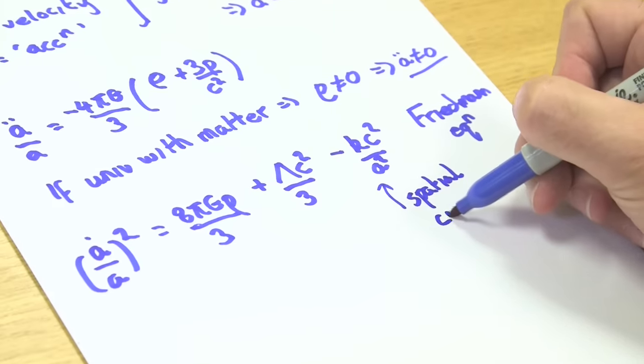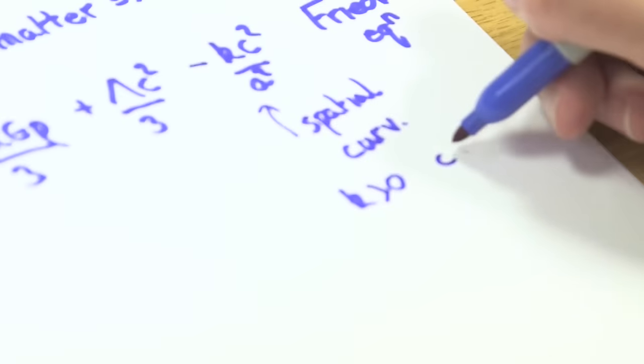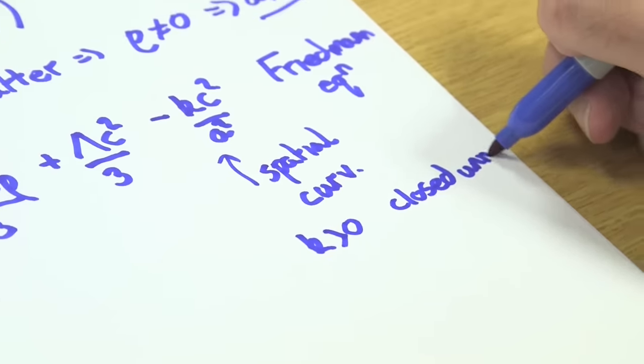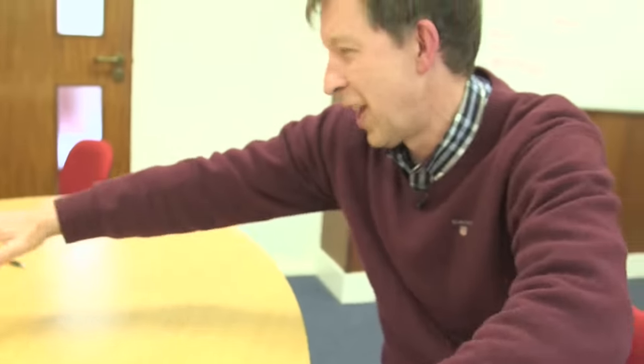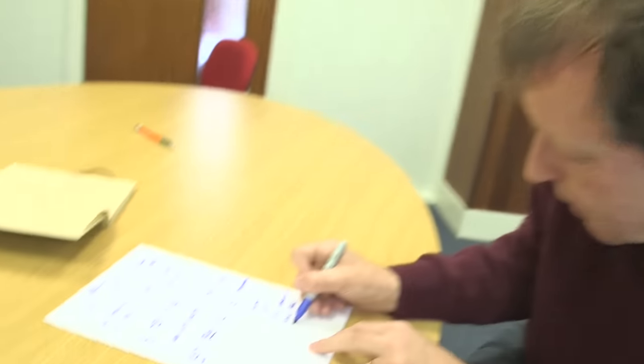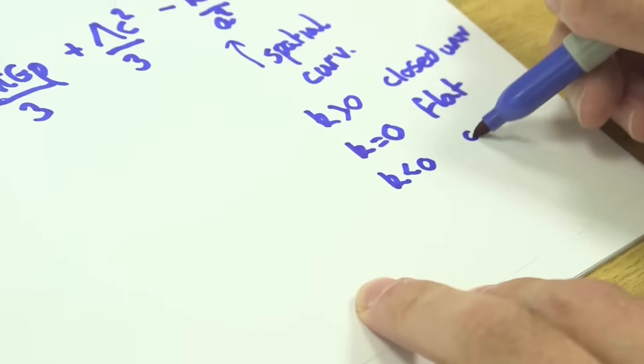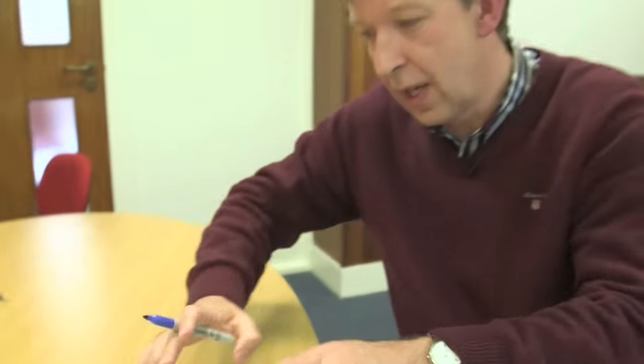There are three possibilities consistent with Einstein's original idea that the universe is homogeneous and isotropic. One is if k is positive, known as a closed universe - the universe is finite in spatial extent, grows to a fixed size and then collapses. The second, which is what it looks like the universe looks like, is flat. This is spatially infinite. The third is if k is negative, known as an open universe, a bit like a saddle, also infinite. We have these three types of universe, all consistent.